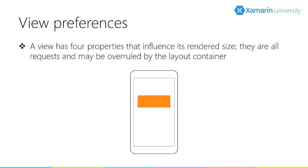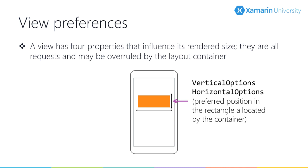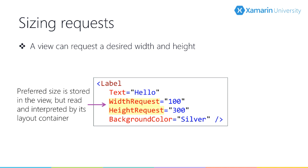The view does this collaboration by setting four properties that express its preferences to the panel. Width request and height request define its preferred size — notice the word 'request', these are just requests that could be overruled by the layout panel. Vertical and horizontal options define where the view gets laid out within the rectangle that the container allocates for it.